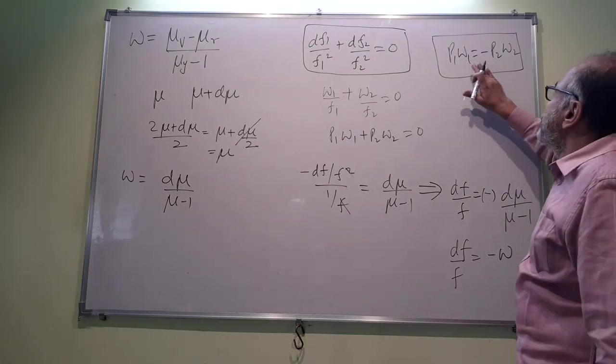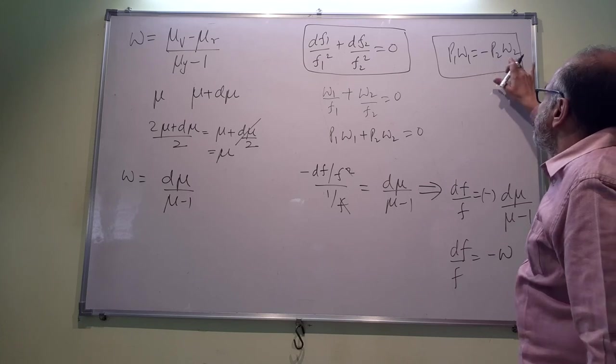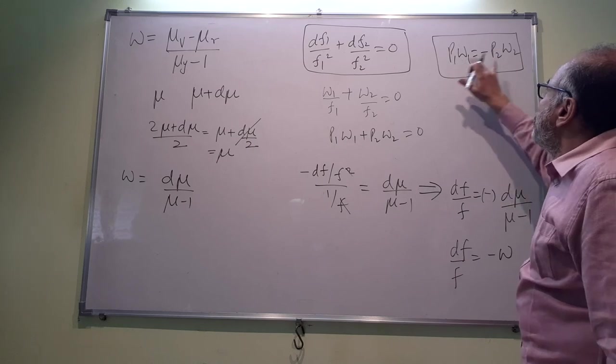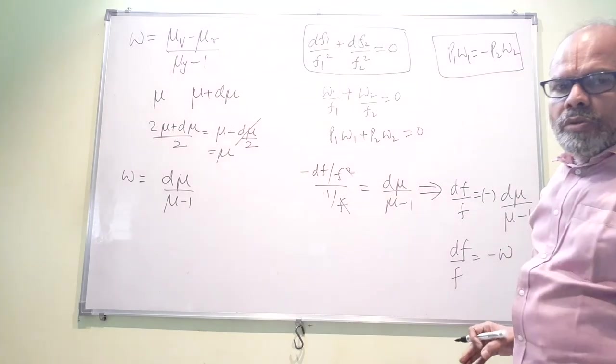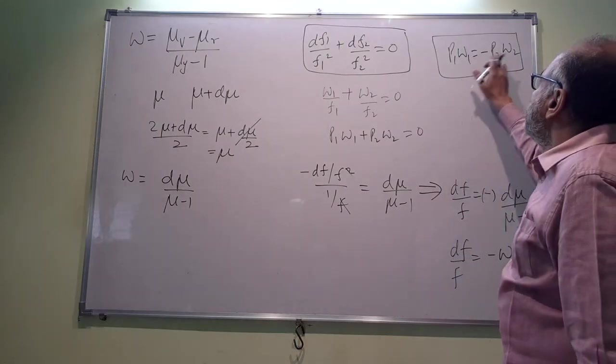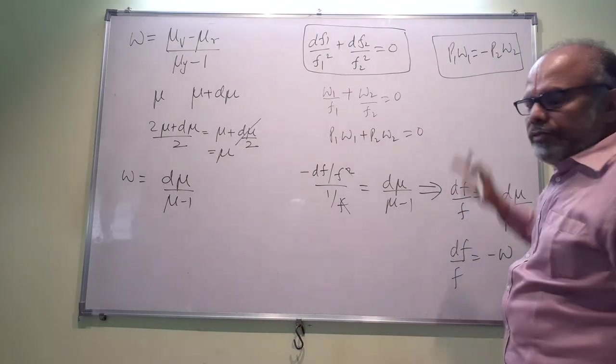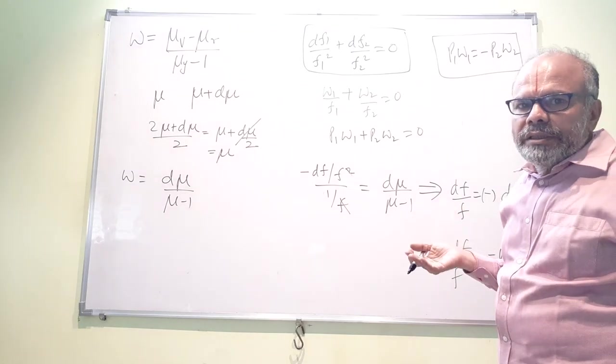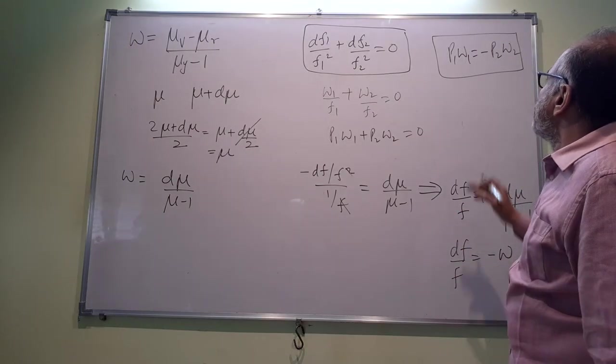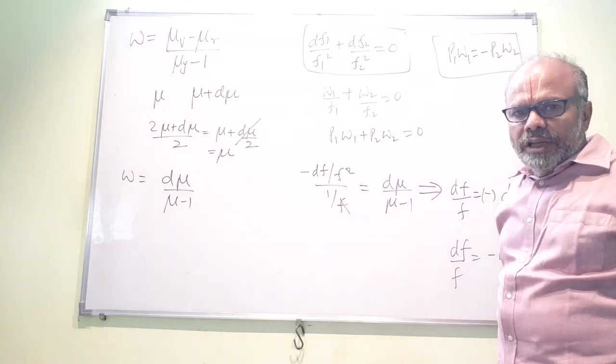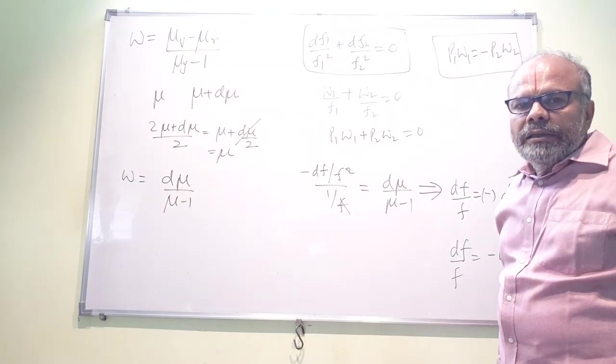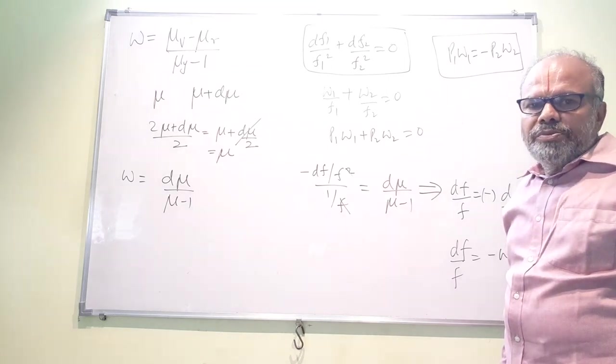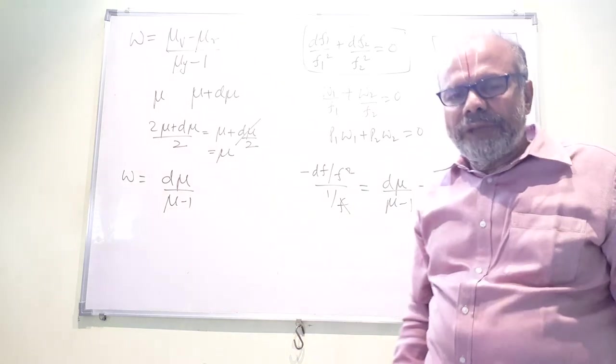This is the condition for an achromatic combination of lenses. What we must note is that ω₁ and ω₂ are positive. So therefore, if there is a negative sign here, either P₁ or P₂ must be negative. Only then the equation will hold, which means that if one of the lenses is converging, the other lens must be diverging. So we can say the product of the optical power and the dispersal power of the two lenses must be equal and opposite. Thank you.